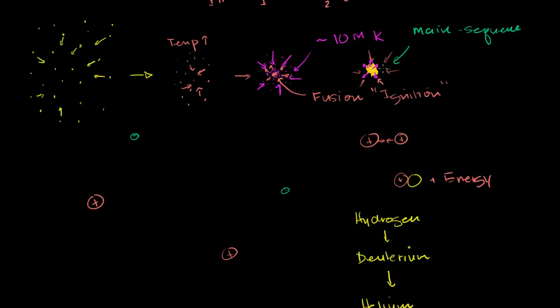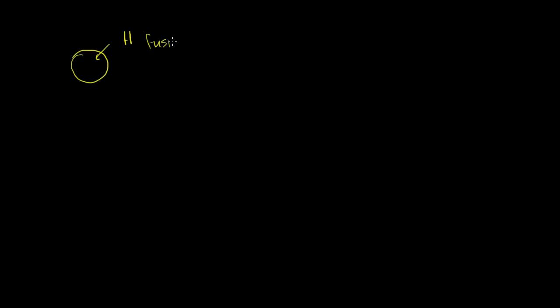What I want to do in this video is take off from that starting point and think about what happens in the star next. In the main sequence, we have the core of the star where hydrogen is fusing into helium, and it's releasing just a ton of energy. That energy is what keeps the core from imploding — it's the outward force to offset the gravitational force that wants to crush everything.